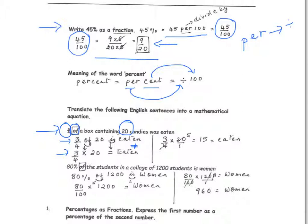We've converted the words into a math equation. All we have to do is simplify the numbers. By canceling common factors, 4 goes 5 times into 20, so it becomes 15. You can do all this using a calculator, but when the calculations are simple, it's easier to do it by hand.